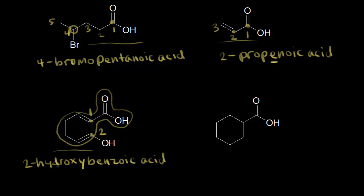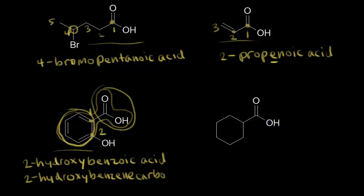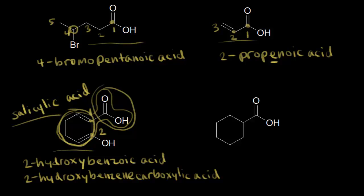If we wanted to name this another way, we could call it 2-hydroxy- or ortho-hydroxy-benzenecarboxylic acid, but that's much longer and less commonly used. The common name for this molecule is salicylic acid. Salicylic acid is famous because it's a precursor to aspirin and wintergreen. The name comes from the Latin word for willow tree, because you can get this compound from the bark of the willow tree. The Greeks knew about it — it reduces fevers and decreases pain, which is why salicylic acid was eventually transformed into aspirin.